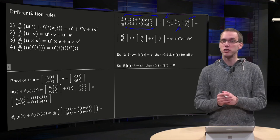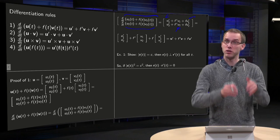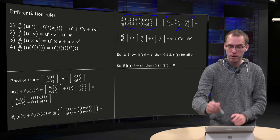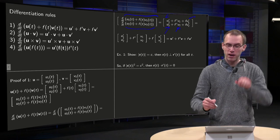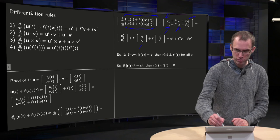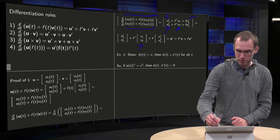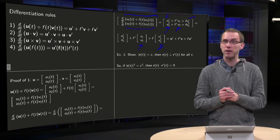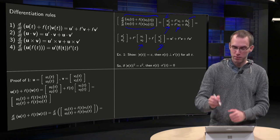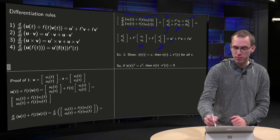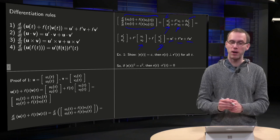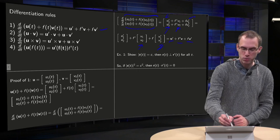And now we can split it up into stuff with u1 prime and u2 prime. Take f prime in front and then you have a vector with v1 and v2. And take the f in front and you get a vector with v1 prime and v2 prime. So what we see, we have u prime plus f prime times v plus f times v prime, which is exactly what rule 1 says.